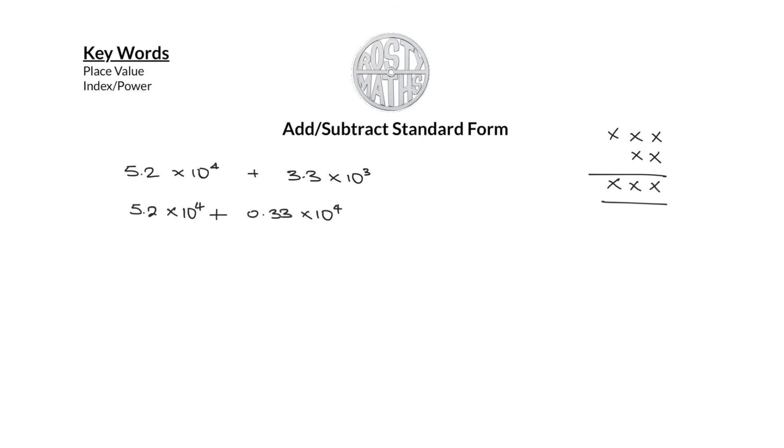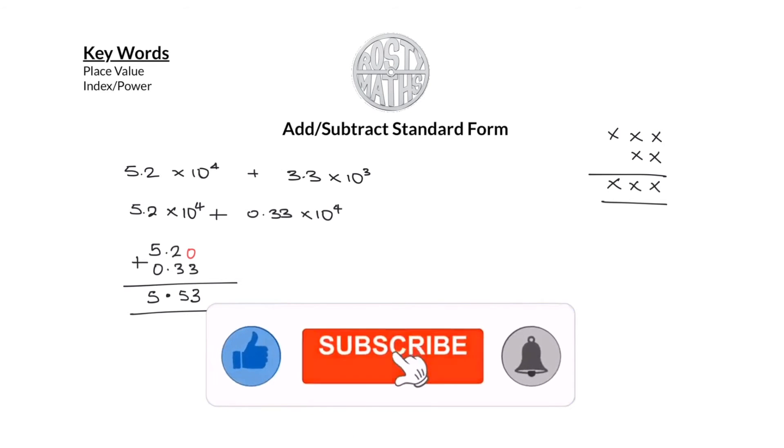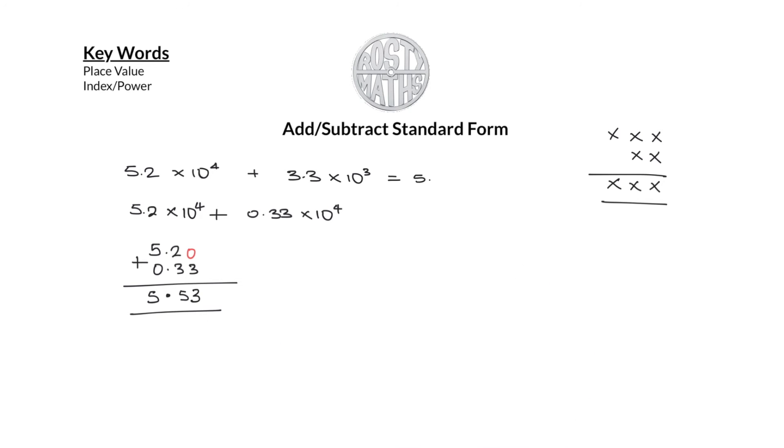Just add the numbers on the front. So I will just add my 5.2 to my 0.33. Now if you don't know how to add decimals, click on the pop-up banner and go and watch my video on adding decimals. Anyway, I will fill up this space here with a 0 and then let's jump into it. So 0 add 3 is going to give me 3. Then 3 add 2, that's going to give me 5. Put the decimal back there. 5 add 0 is 5. So therefore the final answer of this particular question is 5.53 times 10 to the power 4.